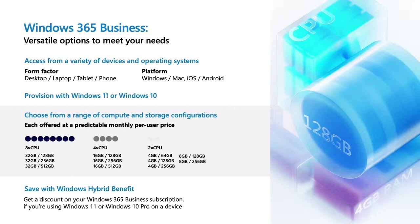We give you the option to choose between Windows 11 and Windows 10. While we want you to experience the latest that Windows 11 offers, we understand some would prefer Windows 10 for any number of reasons, and you have the flexibility to choose that. We also have 11 configurations in total, so you can choose the right computing power, memory, and storage for your users' needs. You can also get a discount on your business subscription if you're using a Windows Pro device — visit windows365.com for more information.